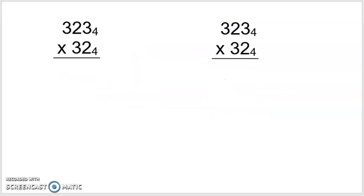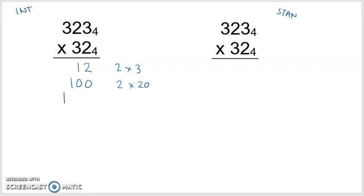Let's do one more — a little more complicated because it involves hundreds. I'll do it again using the intermediate algorithm on the left and the standard algorithm on the right. Using the intermediate algorithm with powers of 10, and we're in base 4 this case: 2 times 3 in base 4 is 6 — that's 1 four and 2 left over, so 12. 2 times 2 in base 4 is 4, which is 1 four and 0 left over, giving 10. But this is 2 times 20, so using powers of 10 that's 100. And 2 times 3 we've already said is 12, but this is 2 times 300, so we take 12 and add two zeros — that's 1200.